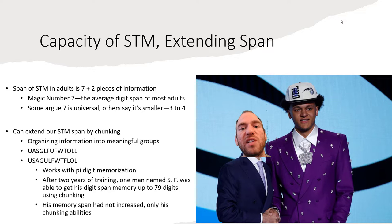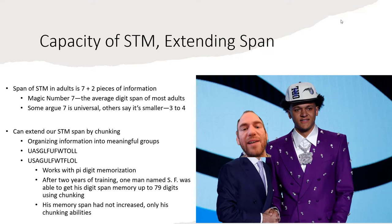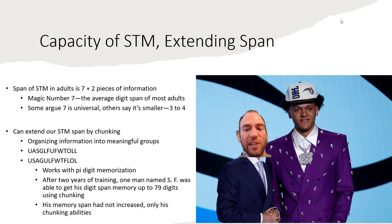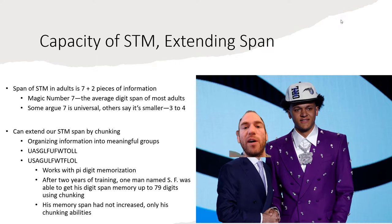A digit span test presents numbers for 30 seconds, then removes them and asks you to repeat them back after a minute. You can 'life hack' your short-term memory using chunking — grouping numbers into meaningful units — which is what SF used to reach 79 digits of Pi memorization.